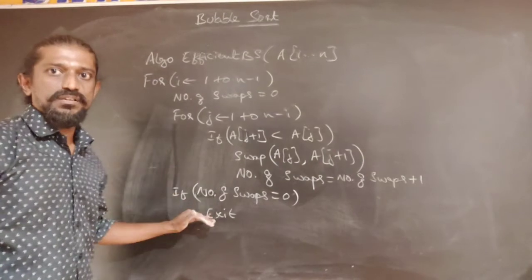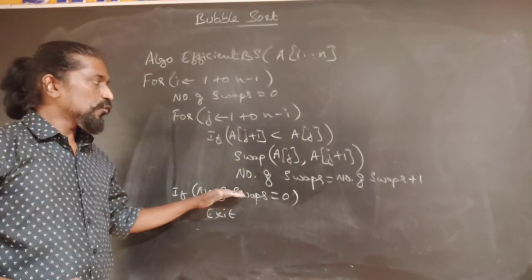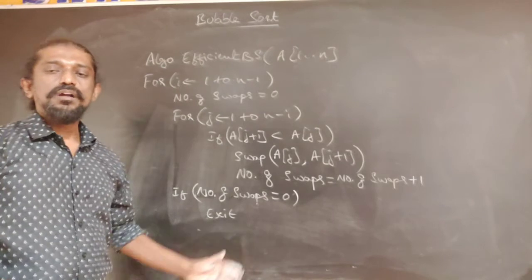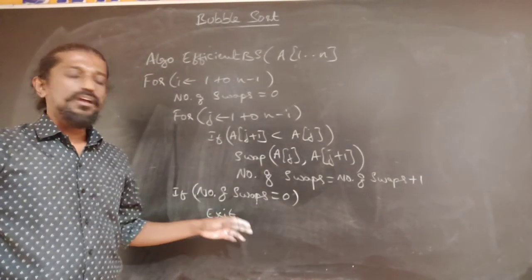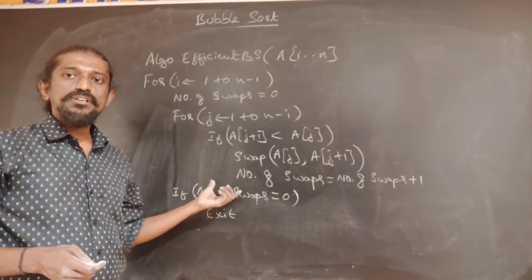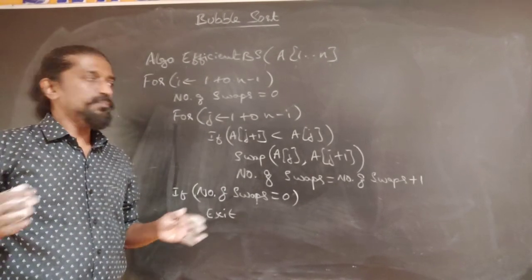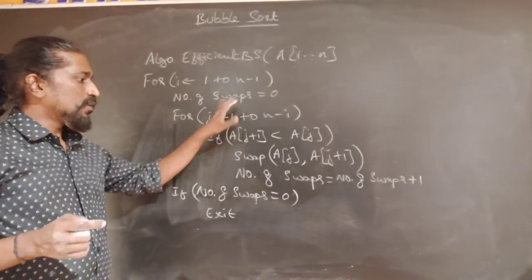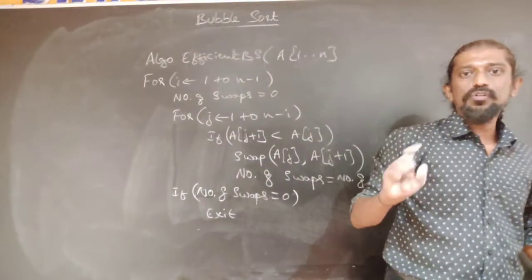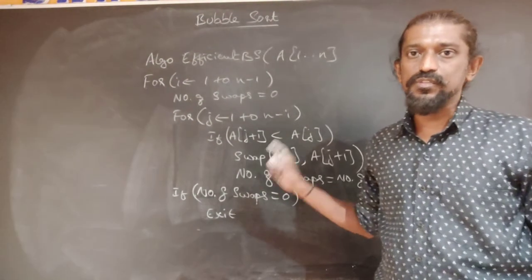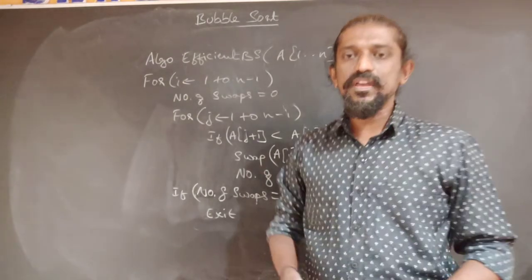Whatever pass it is — if at the end of that pass the number of swaps is zero, we don't start the next pass and we exit. For 100 or 1000 elements, if they get sorted in the 4th or 5th pass, all remaining passes are eliminated. This reduces the overall running time of the algorithm, though the order of growth remains quadratic. Thank you.